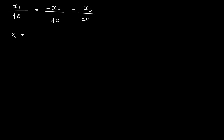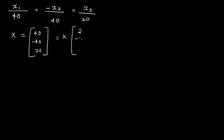This gives the eigenvector. Taking 20 outside as a common factor, x1 is equal to k into (2, minus 2, 1). So the eigenvector for lambda equal to 15 is proportional to (2, minus 2, 1).